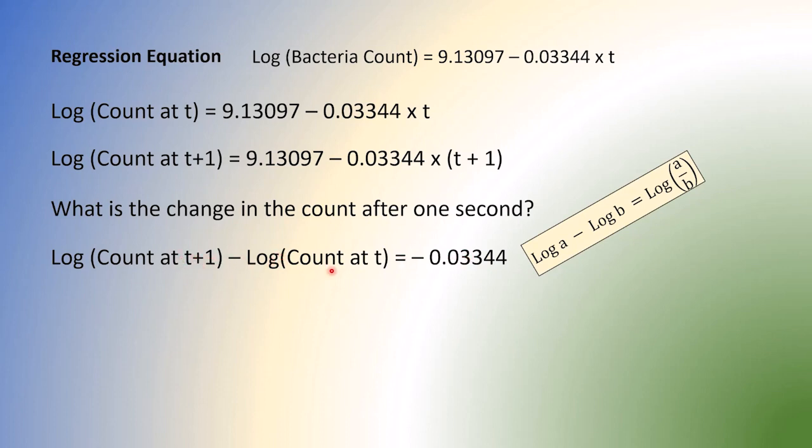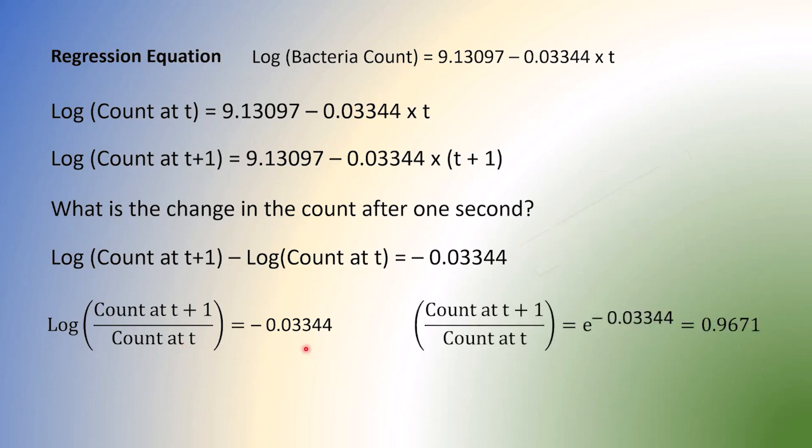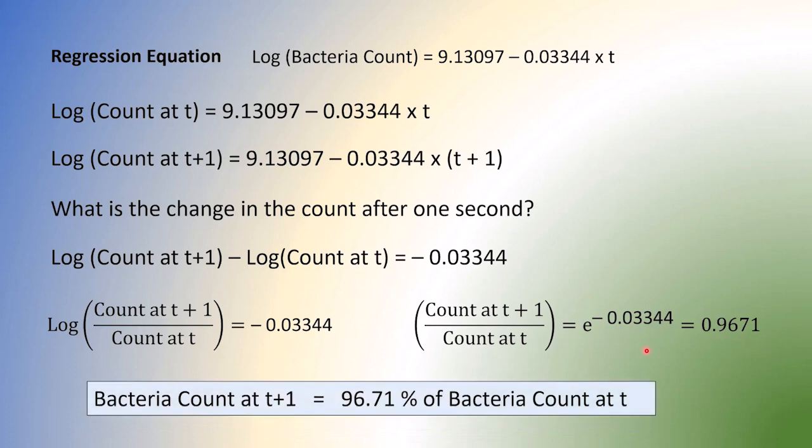But this difference doesn't make any sense to us right now. So we're going to use some log properties. Log a minus log b equal to log a over b. So that's what we get. Now when we do reverse transformation with base e, we get this. What that means? That means that after every second, the bacteria becomes 96.71% of the previous count. It decreases by about 3.4% or 3.3% more like. Decreases.